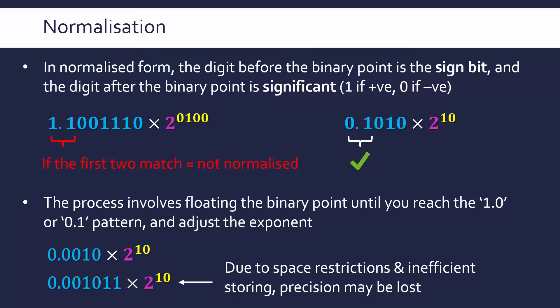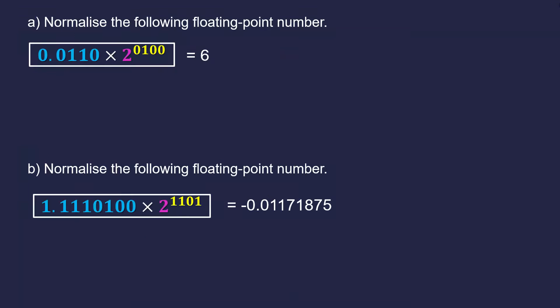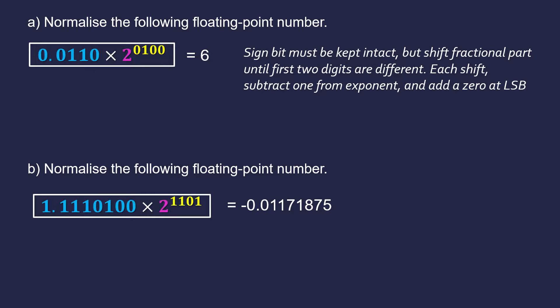Right, so let's look at how we can actually go about normalising a couple of examples here of unnormalised floating point numbers. The first one here is equivalent to the denary number 6, remember you can still have non-decimal numbers in floating point, but here we can see it's not normalised because my first two digits are the same, two 0s.